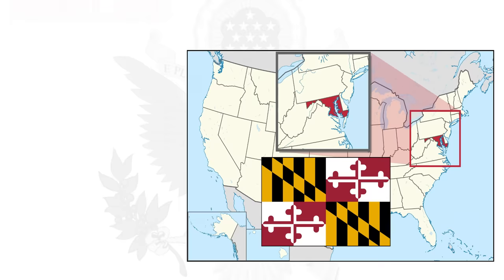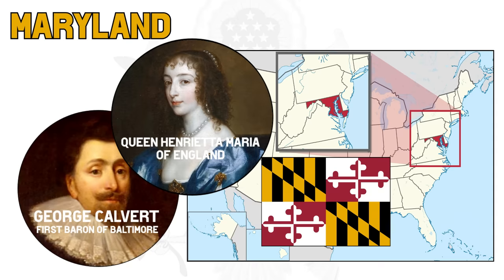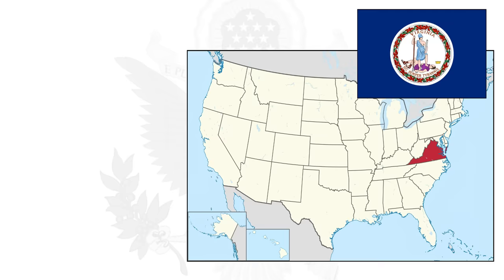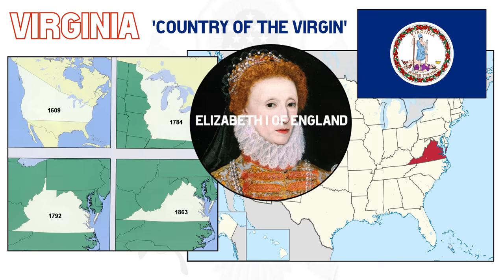Maryland was named by George Calvert, the first Baron of Baltimore, after Queen Henrietta Maria, wife of King Charles I of England. Although some Catholic scholars believe the Baron named the province after Mary, the mother of Jesus. Virginia was the first British colony in continental North America. Its name at the time meant 'Country of the Virgin,' after Elizabeth I of England, who was known as the Virgin Queen because she never married.